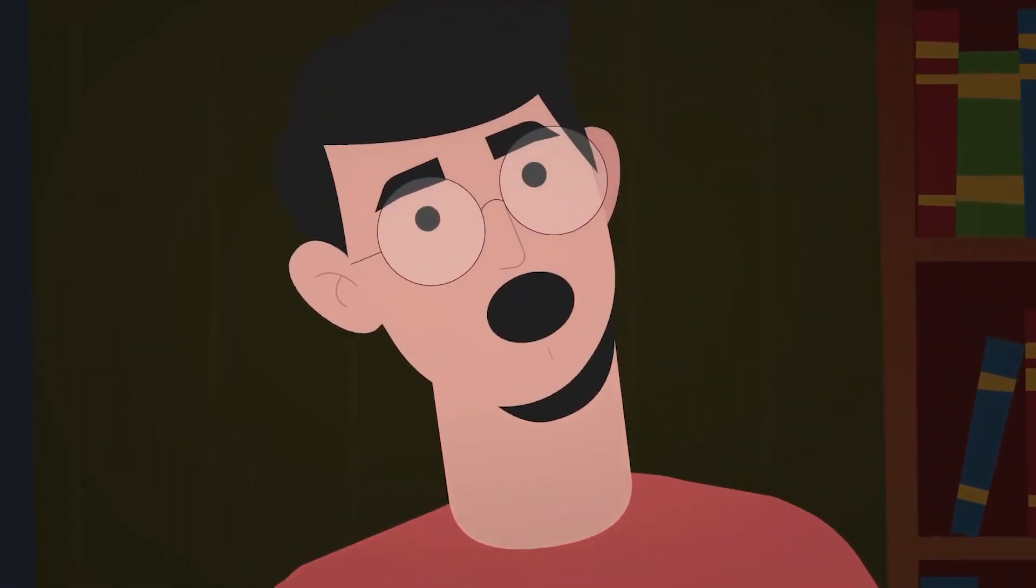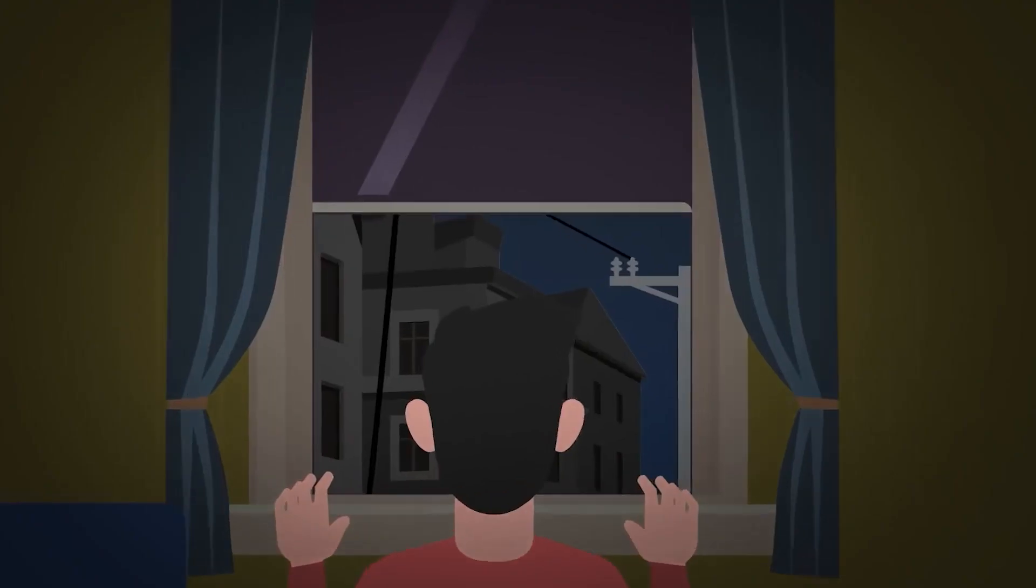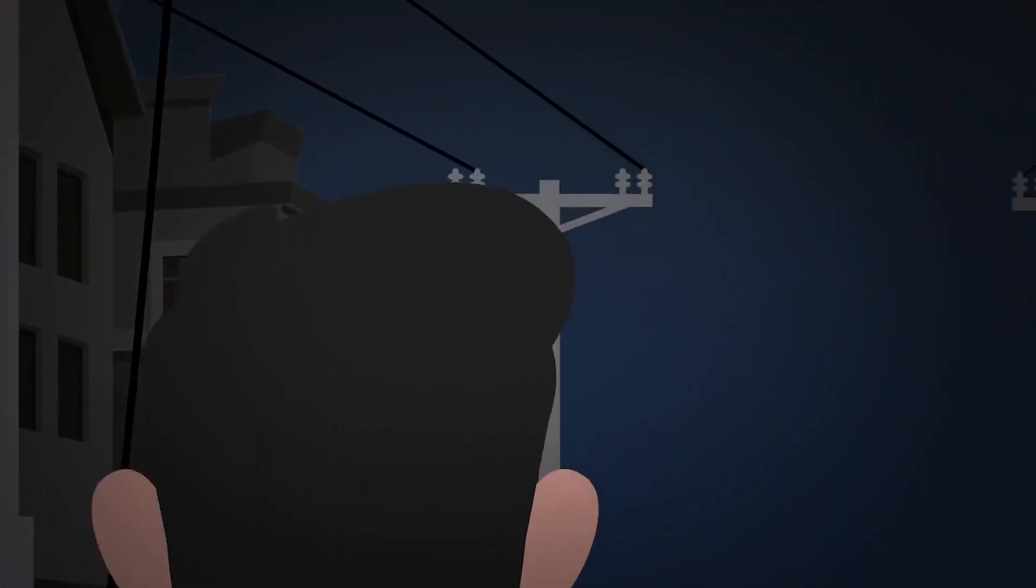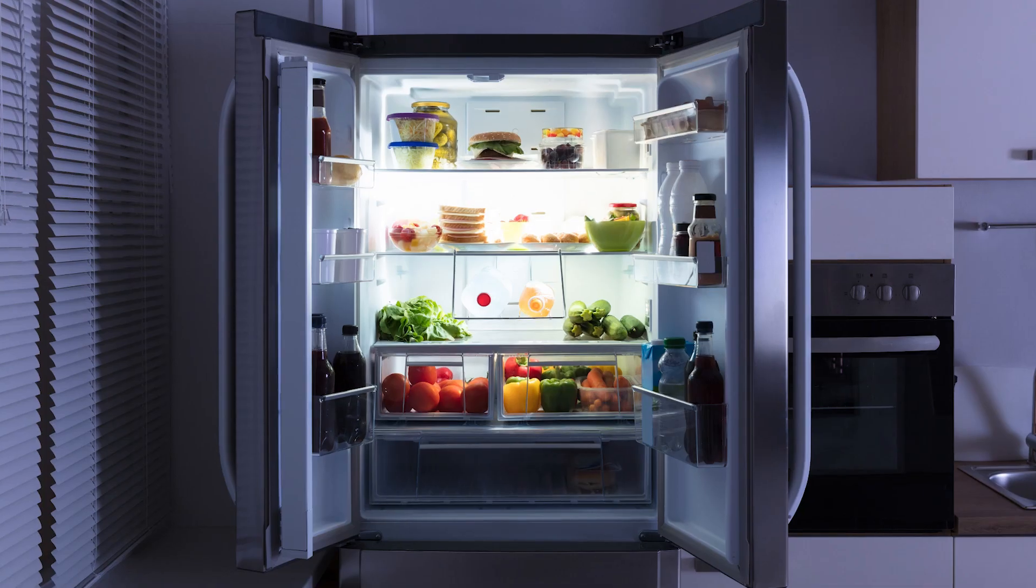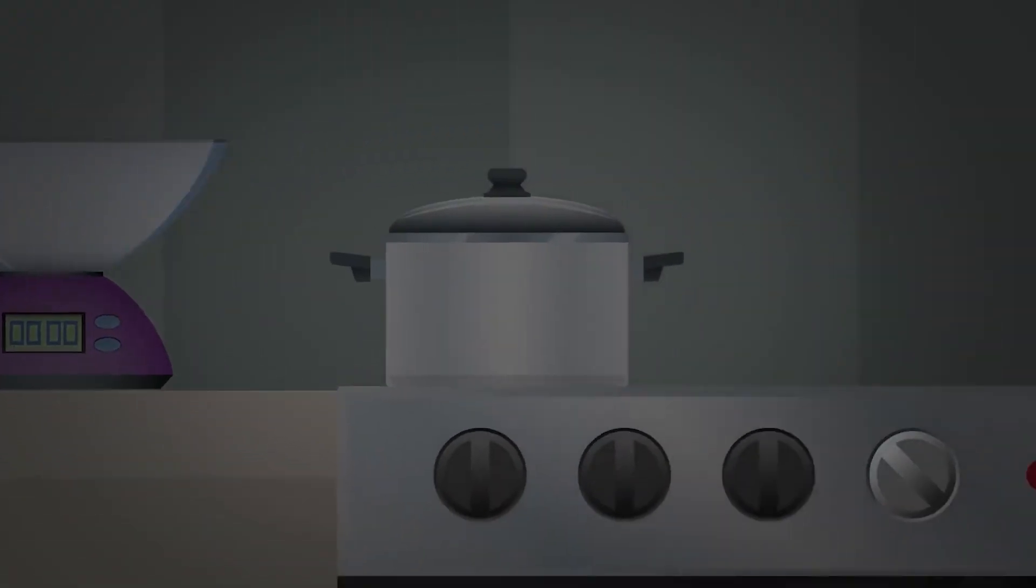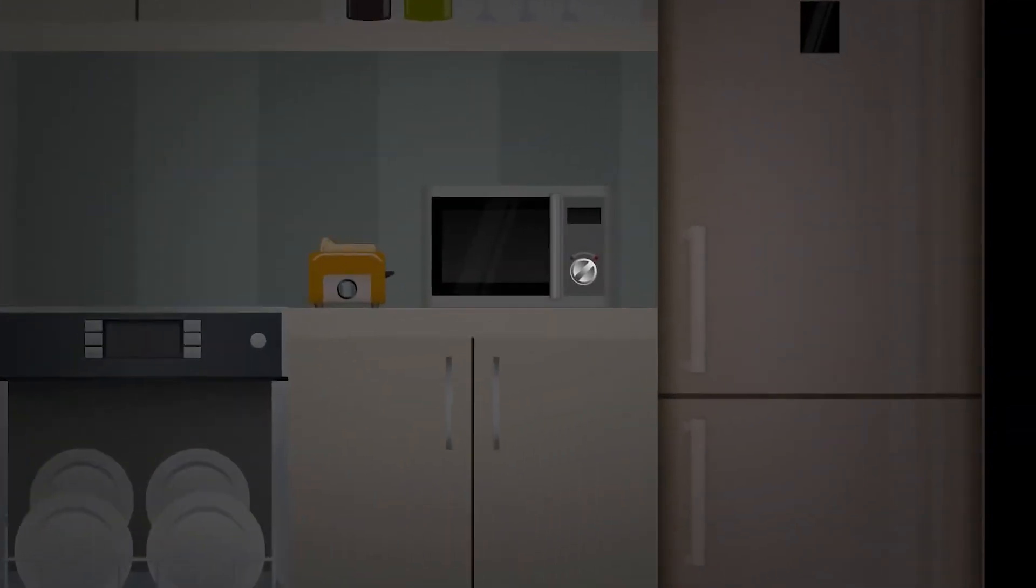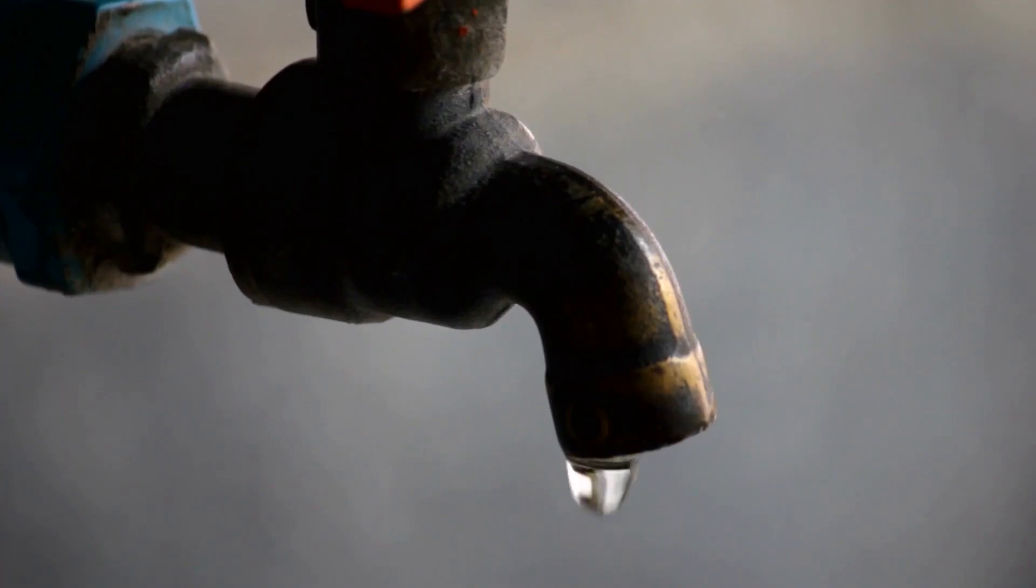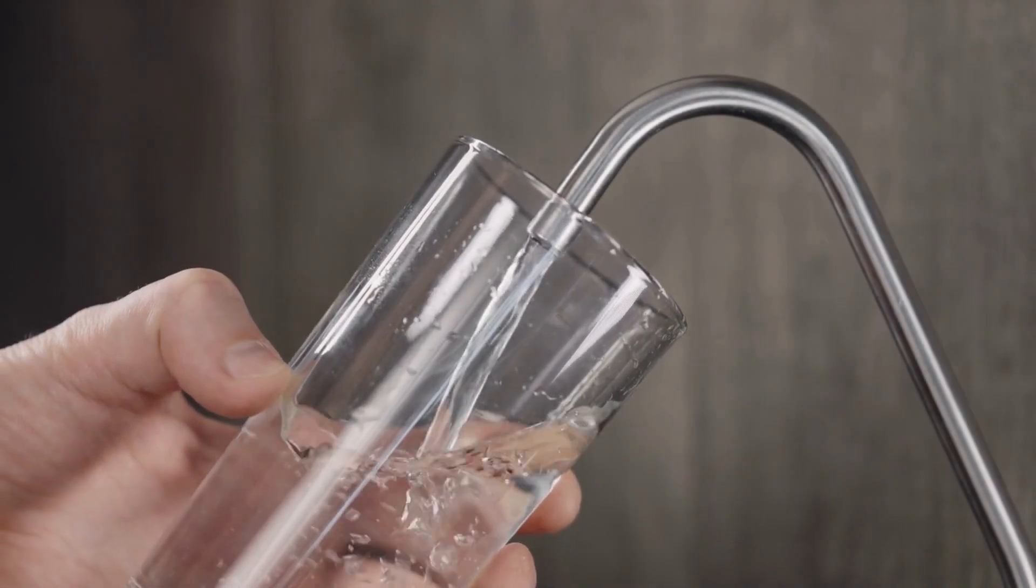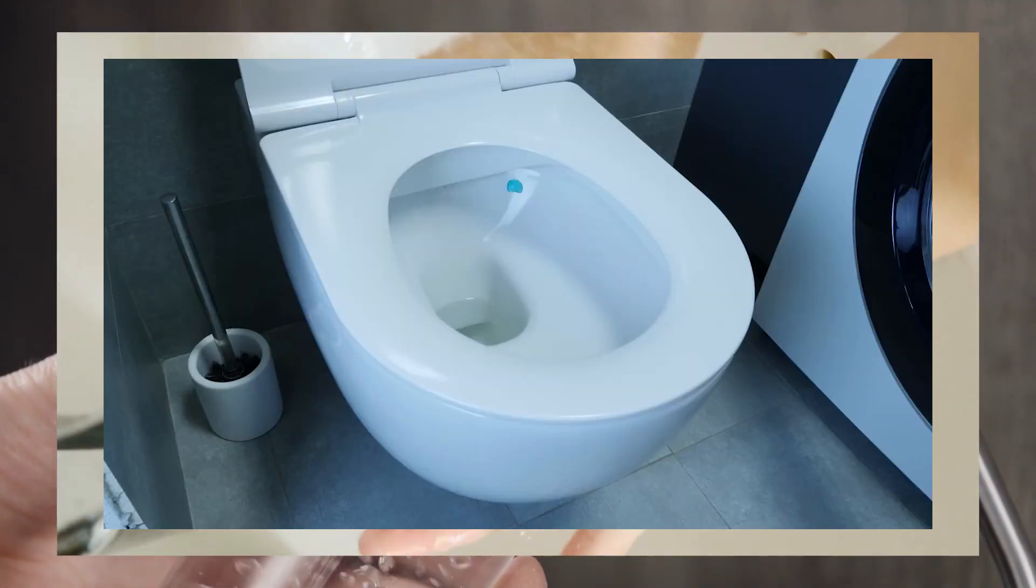In addition to the impacts the power outage would have on society as a whole, it would also impact each individual person or family suddenly living without power. Lights would be out everywhere, as would elevators, refrigerators, freezers, or any other electronically powered parts of your building or home. Depending on the reason for the power outage, it is possible you would lose access to running water. This reality might impact your ability to access municipal drinking water, wash your hands, or flush the toilet.